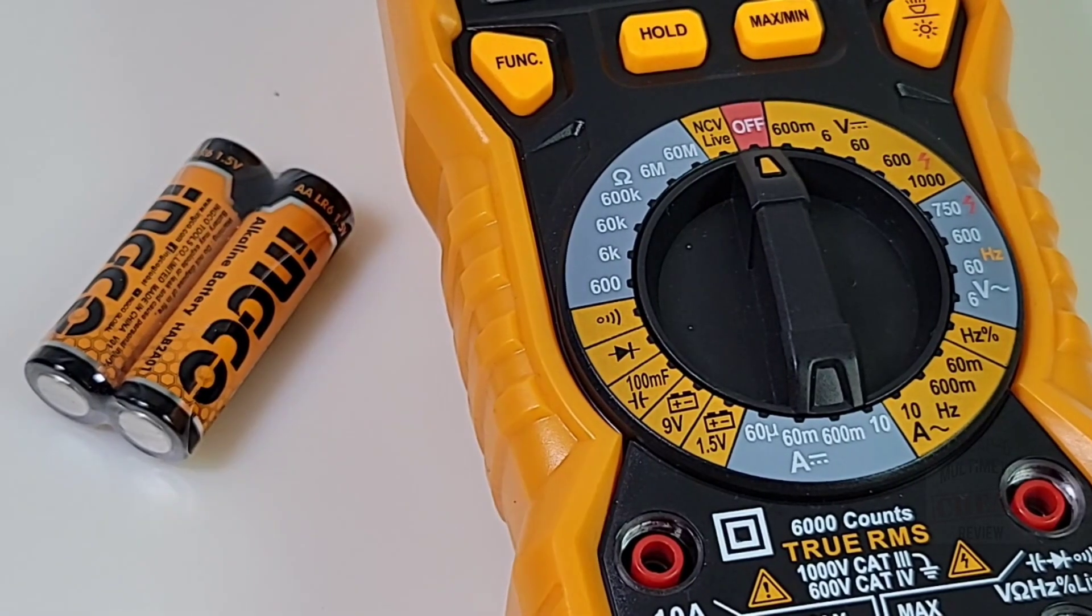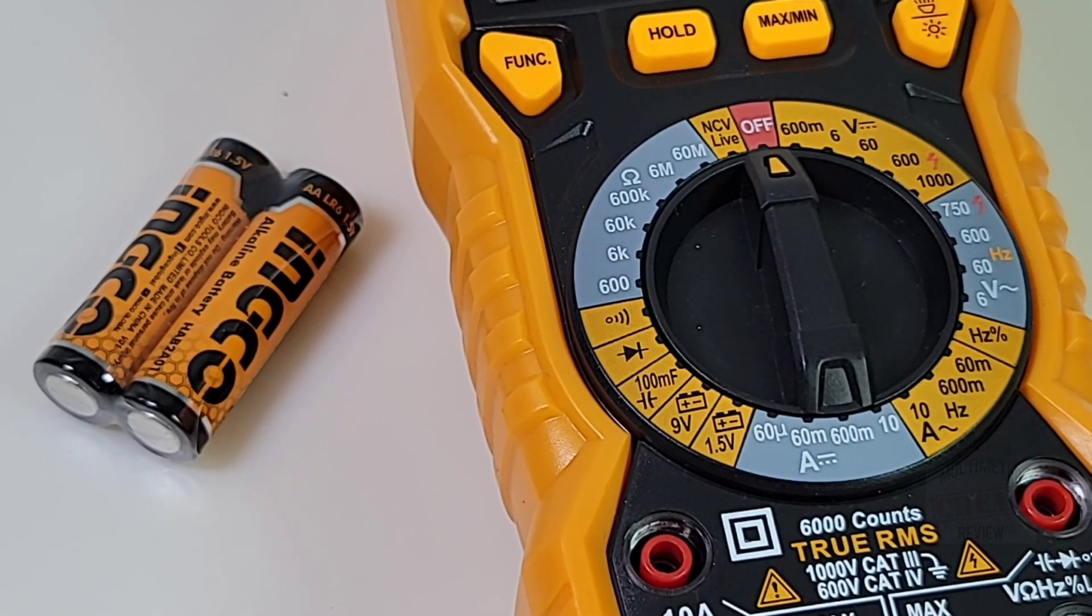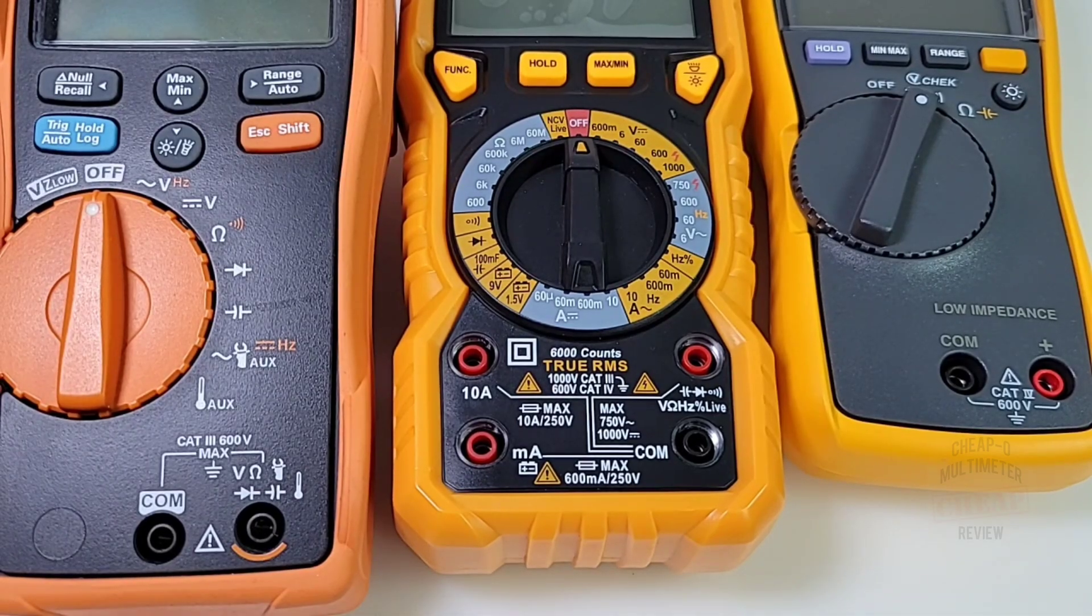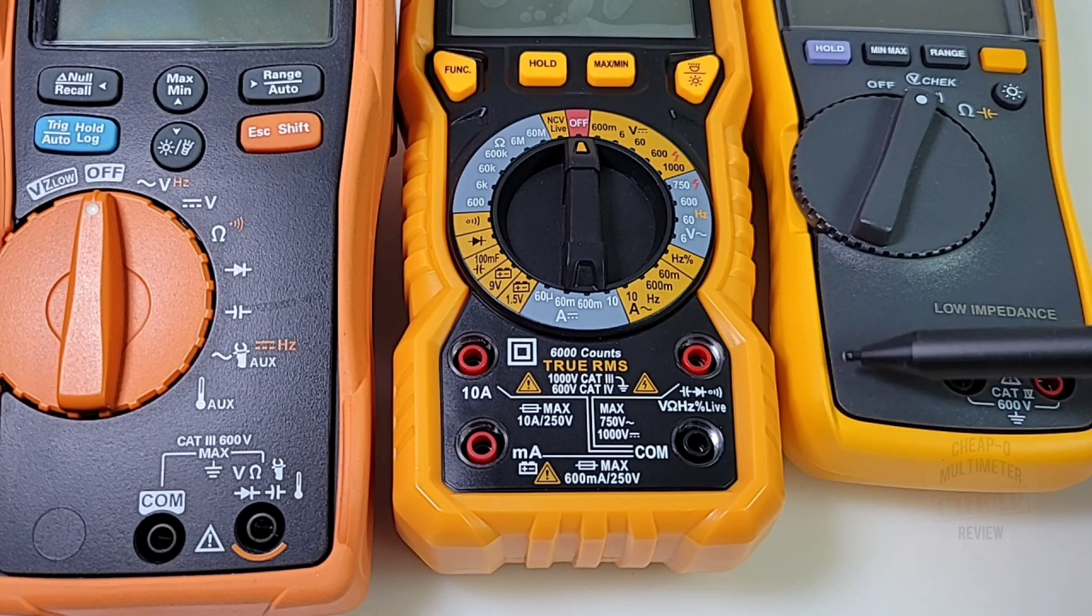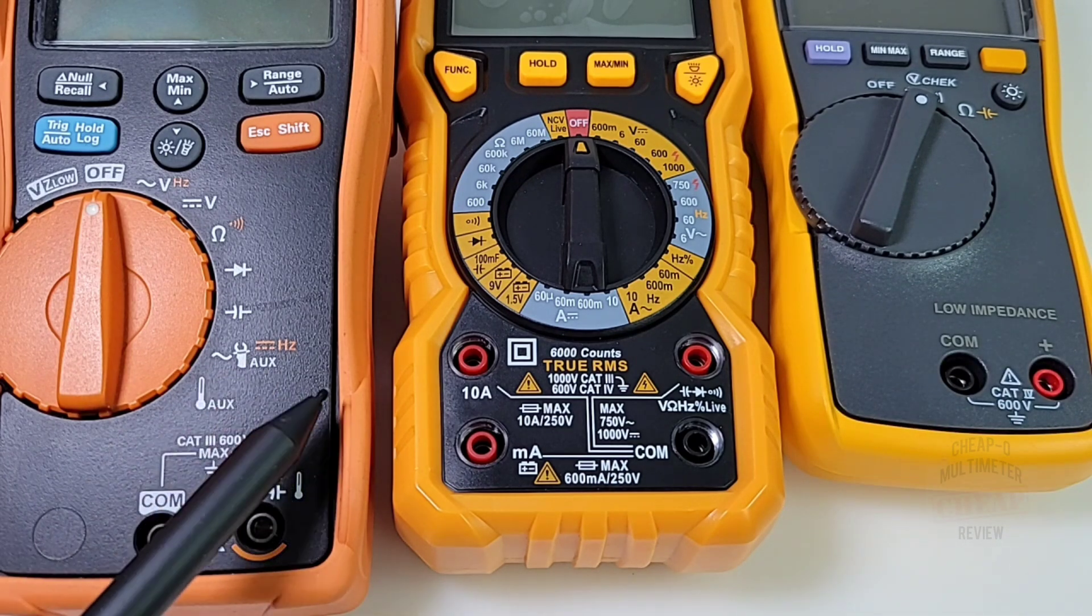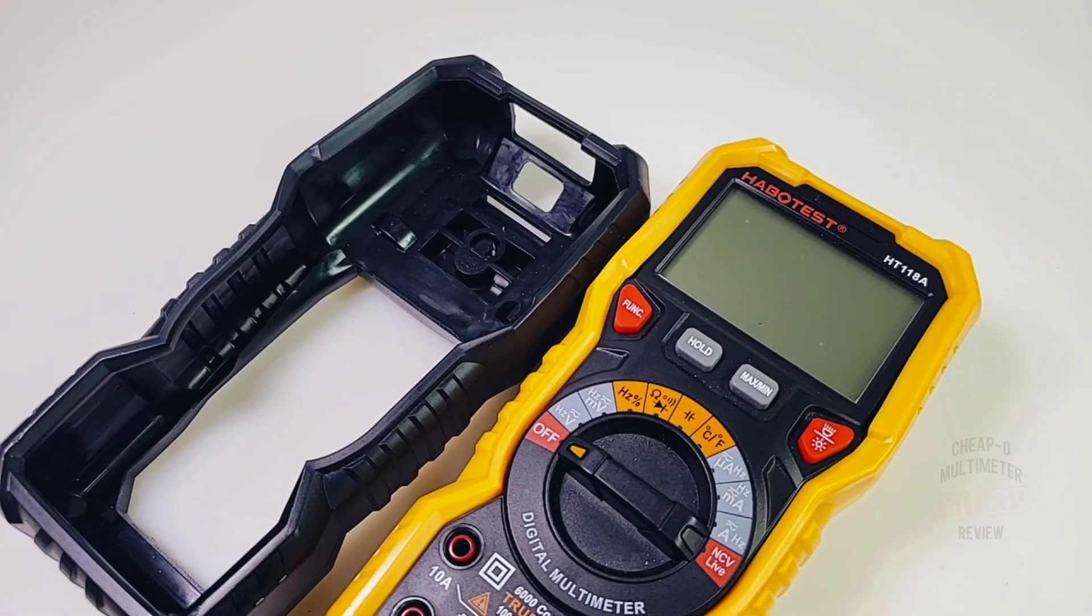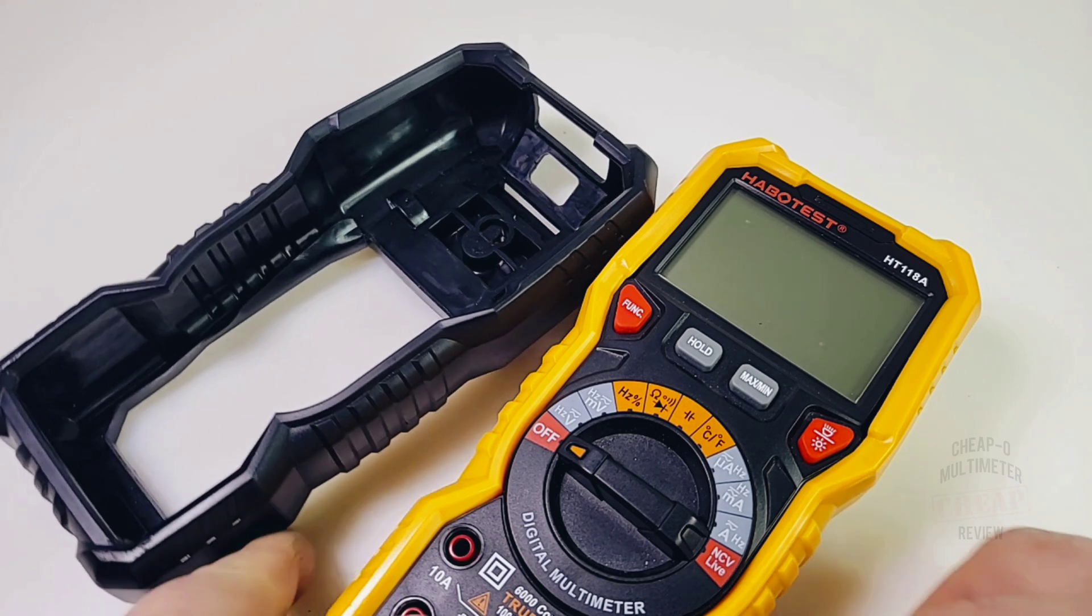And it even ships with a couple of AA alkaline batteries with the Inco branding. Gotta love it. Color of the boot is definitely interesting. It's not so much a fluke yellow, but it's close, and it's not really a keysight orange either. It's somewhere in between. It's unique, but definitely closer to fluke.